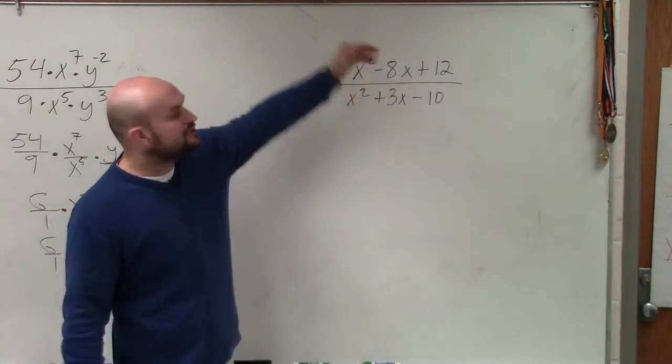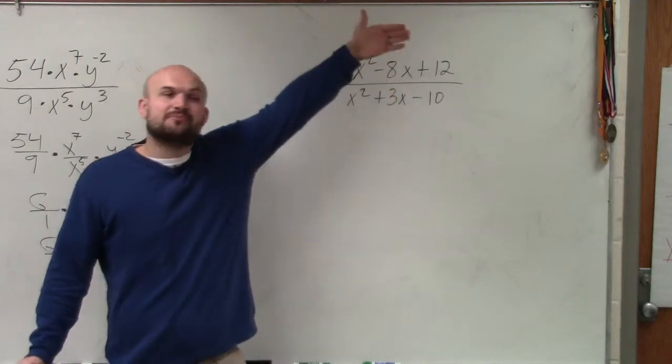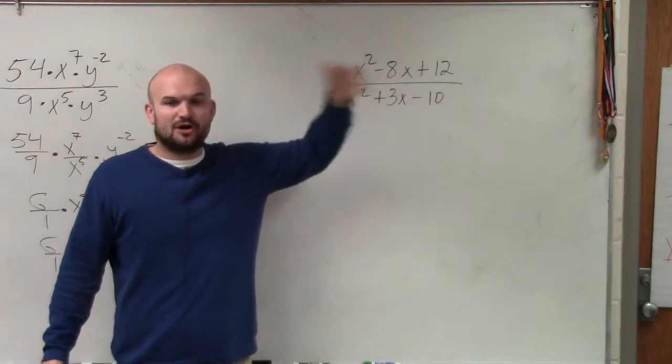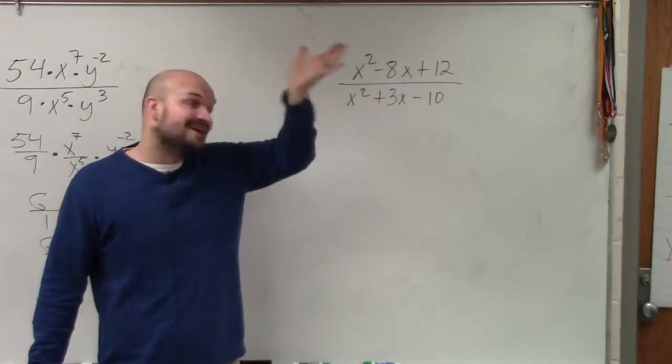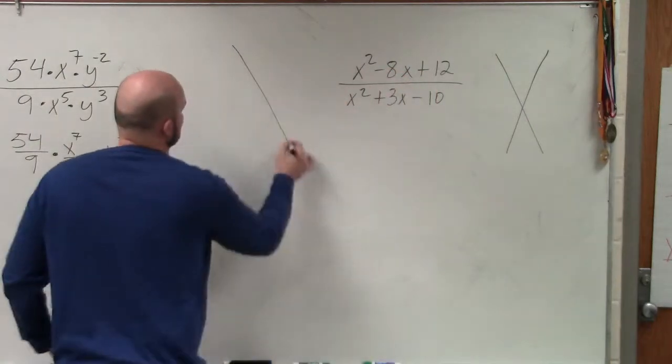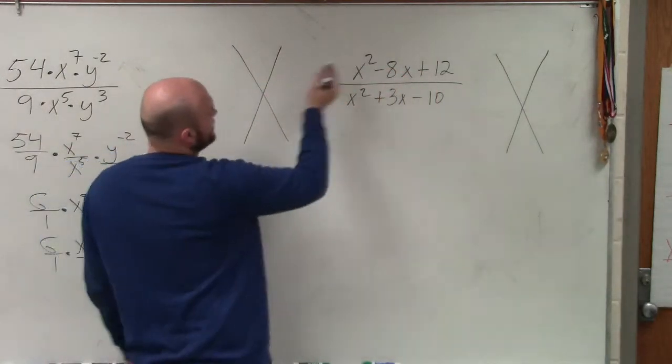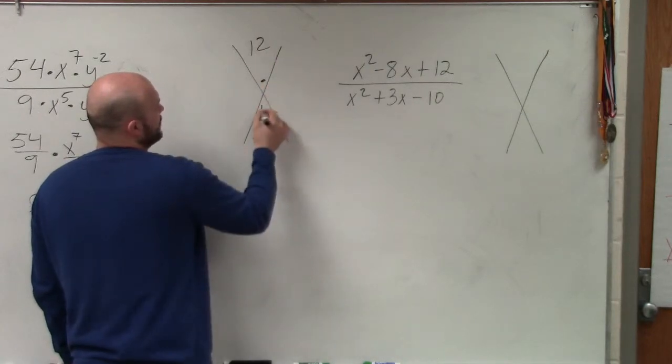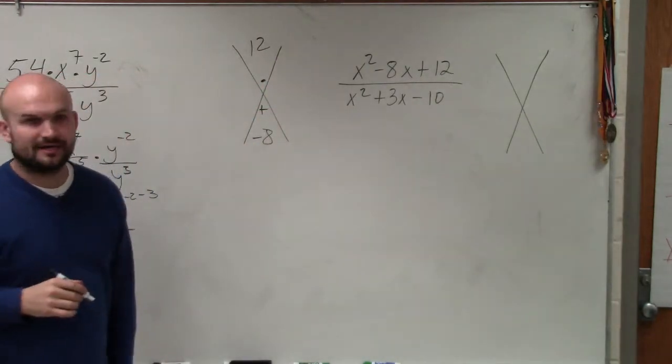So what we need to do is we need to rewrite these as a product. So the process of rewriting an expression as a product is called factoring. So I'll do the numerator and I'll do the denominator. And basically, ladies and gentlemen, the process that we learned last chapter was what two numbers multiply to give you 12 and add to give you negative 8?